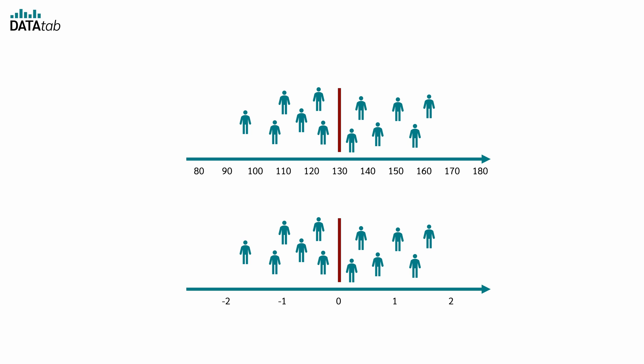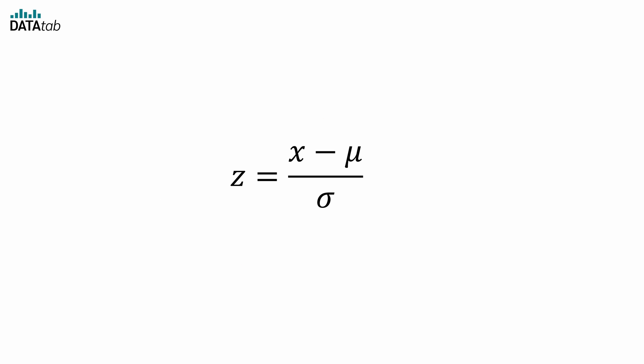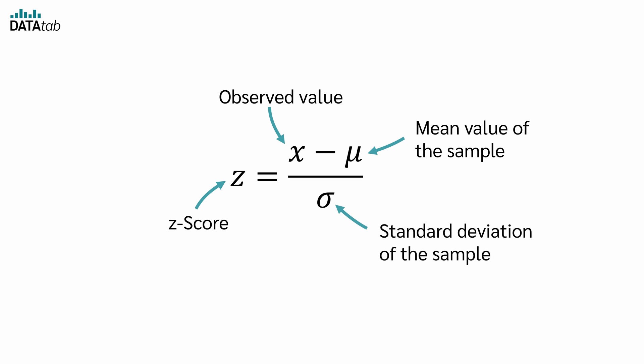Don't worry, that's easy. We now want to somehow convert the initial data, in our case the blood pressure, into z-scores, i.e. perform a z-standardization. Here we see the formula for the z-standardization. z is of course the z-score we want to calculate. x is the observed value, in our case the blood pressure of the respective person. μ is the mean value of the sample, in our case the mean value of all 40 patients. σ is the standard deviation of the sample, i.e. the standard deviation of our 40 patients.